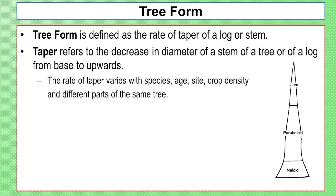Taper refers to the decrease in diameter of a stem of a tree, or of a log, from base upwards. The rate of taper varies with species, site, crop density, and different parts of the same tree.